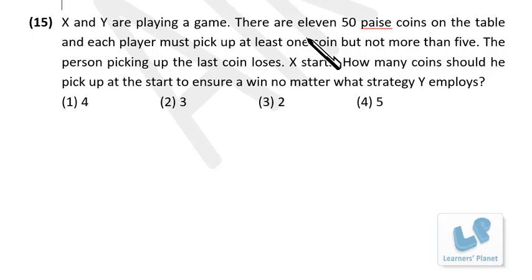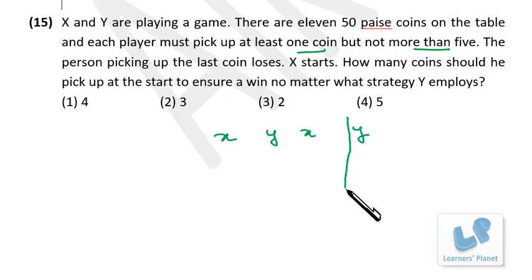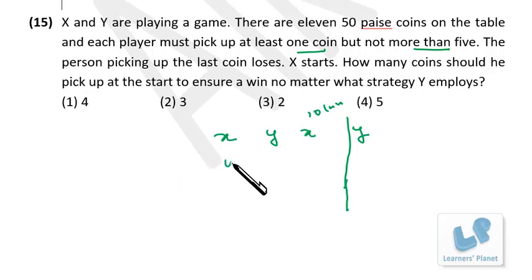X and Y are playing a game. There are 11 fifty-paisa coins on the table. Each player must pick at least one coin but not more than 5. The person picking the last coin loses. X starts. How many coins should X pick at the start to ensure a win? We use a backward approach: the story should end with 10 coins used after X's last turn, leaving 1 coin for Y.